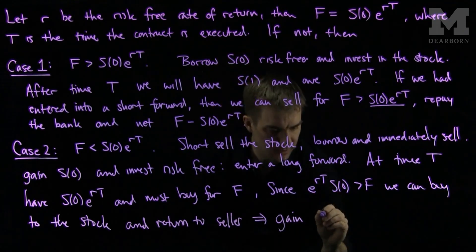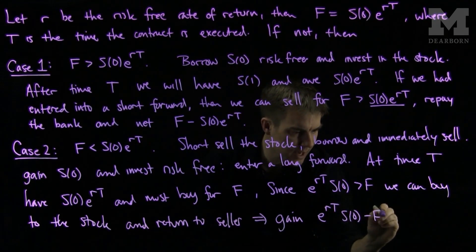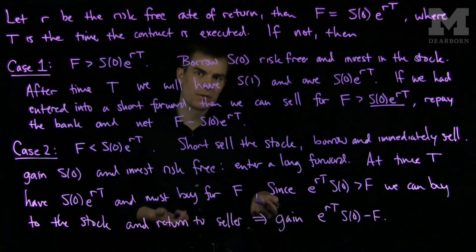a gain of e to the RT times S0 minus F, which is, again, a violation of the arbitrage principle.